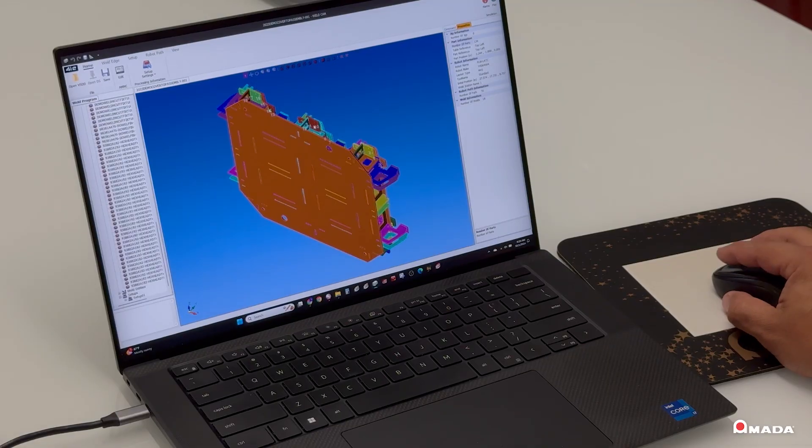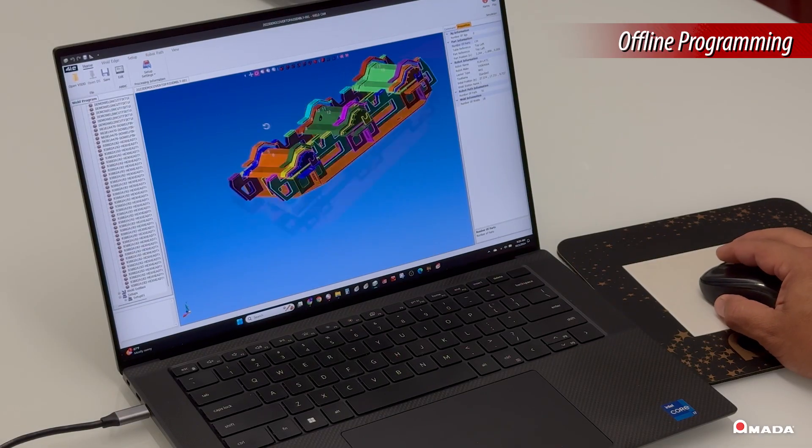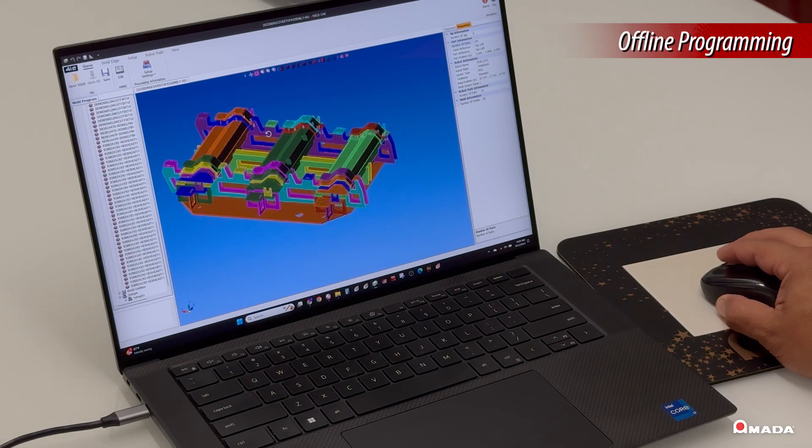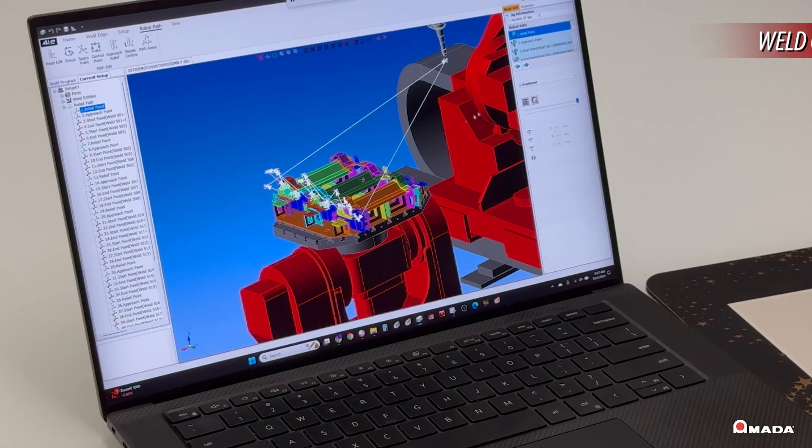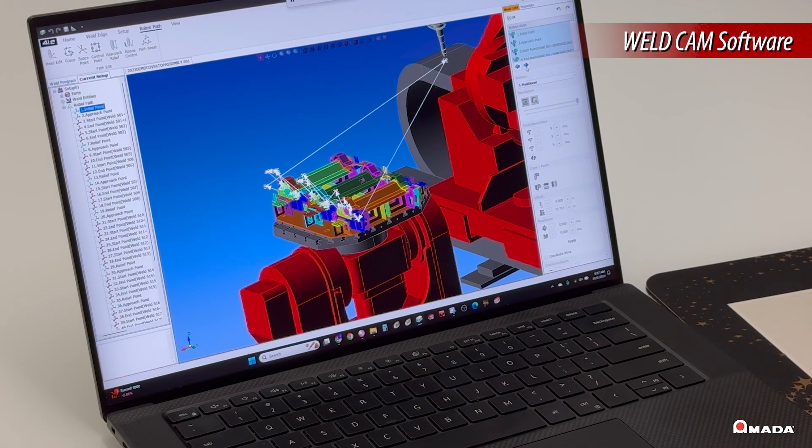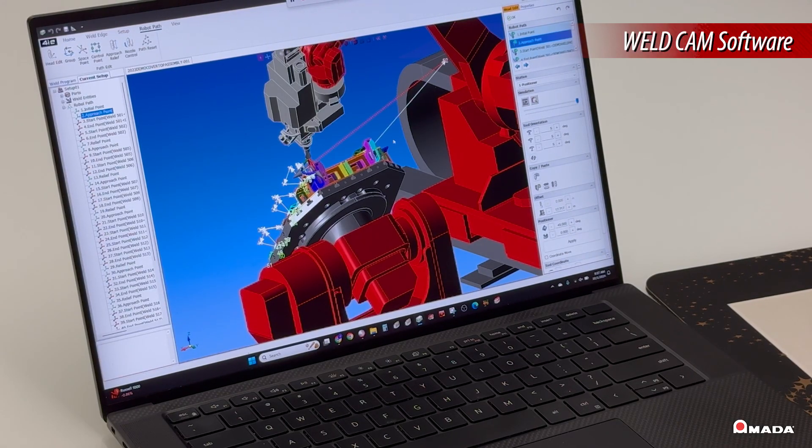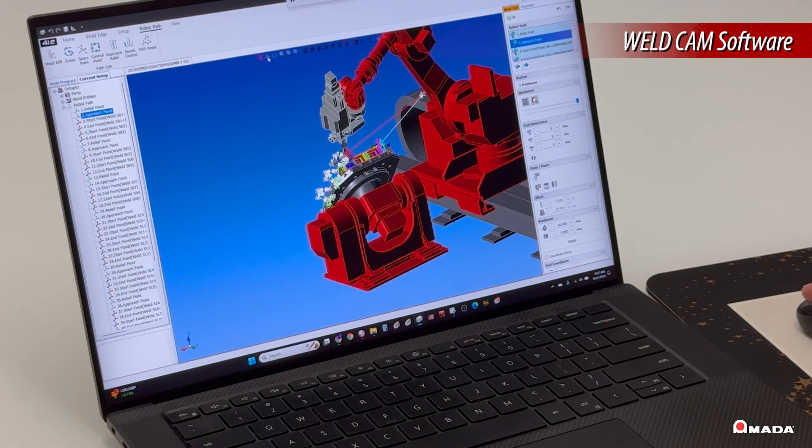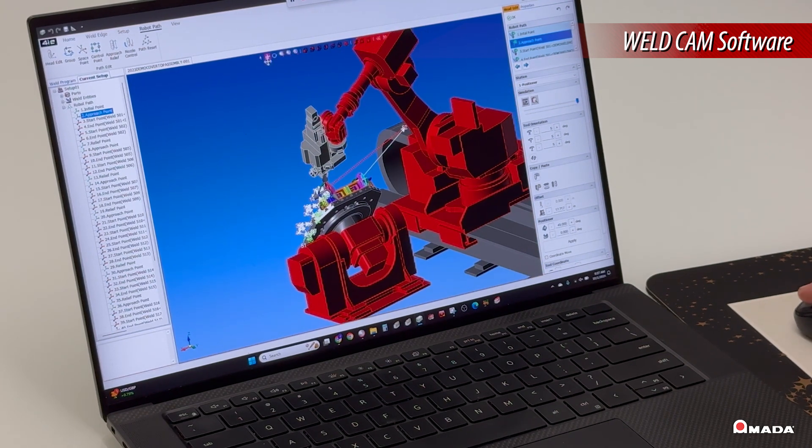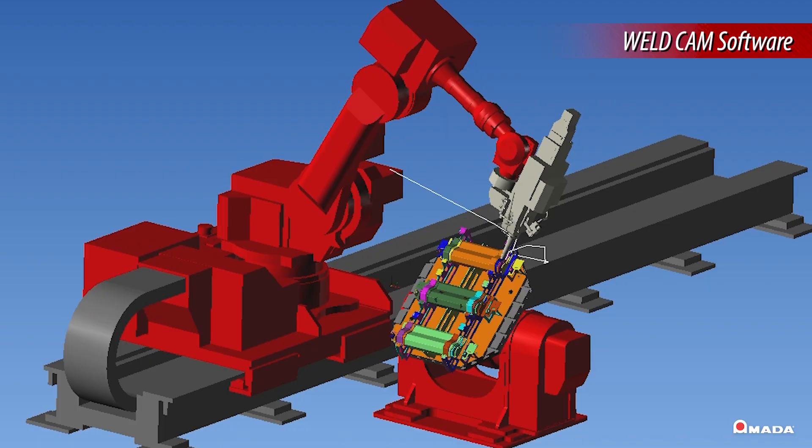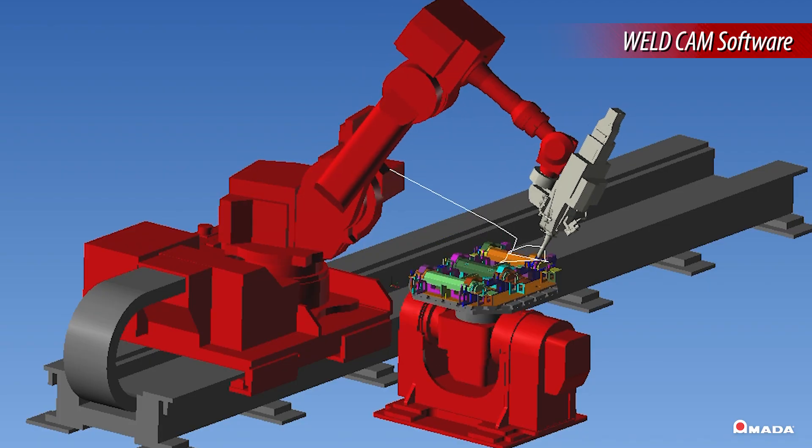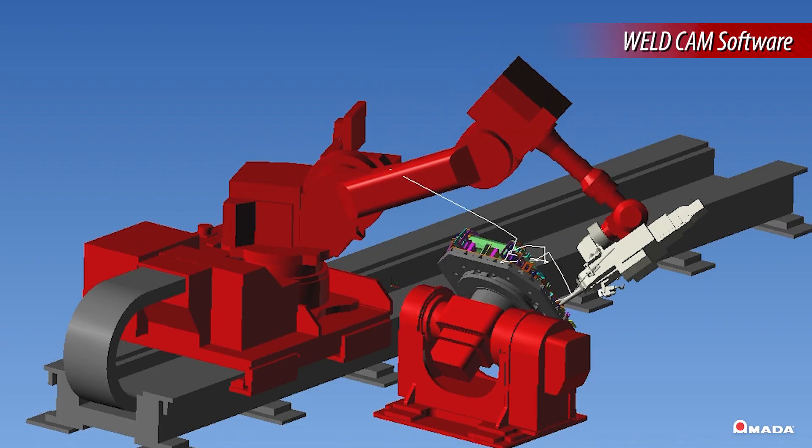The FLW is fully capable of accepting offline programs. With the WeldCAM software, users have total control over the robot and the positioner table in a full 3D environment. WeldCAM displays a full process simulation that helps facilitate the generation of new welding programs.